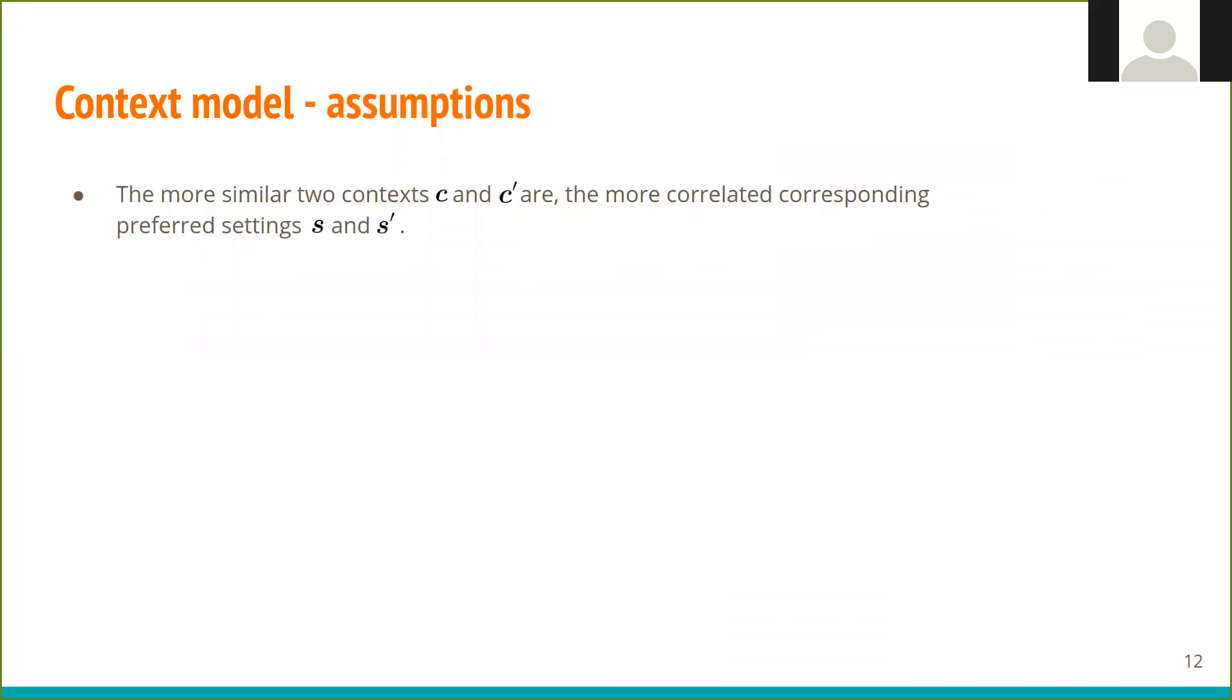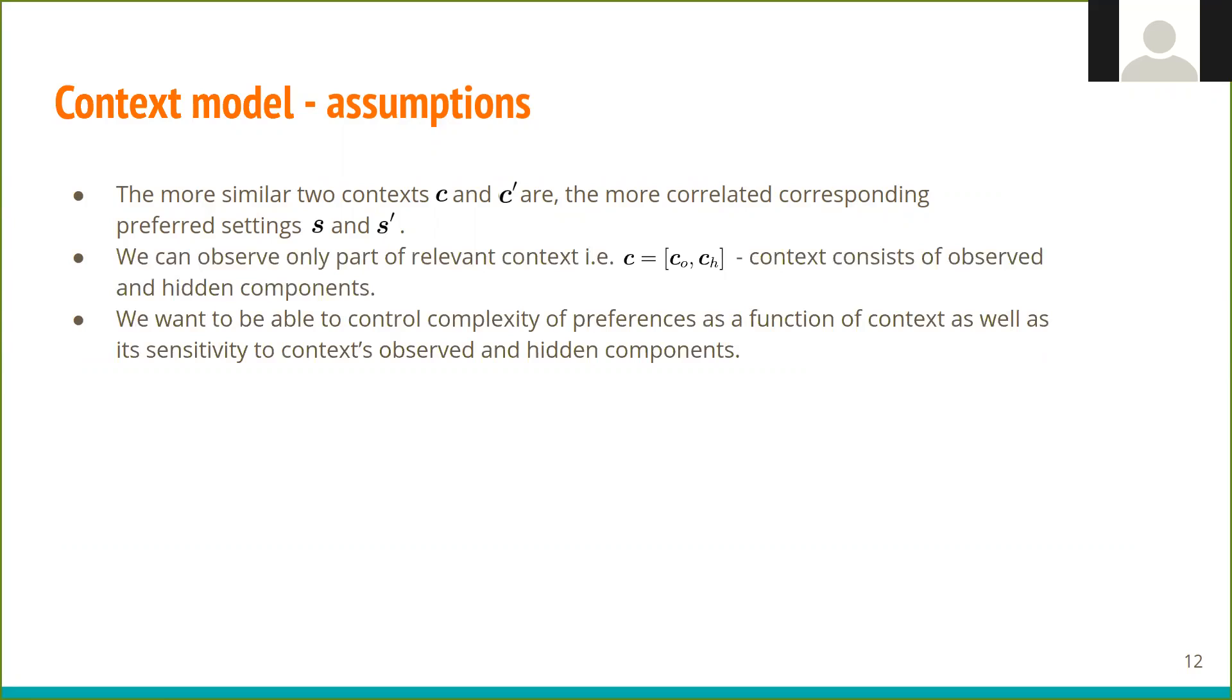In general, we assume that the more similar two contexts are, the more correlated corresponding preferred settings. Moreover, we assume that context consists of observed and hidden components, and that the agent can access only the observed component. Finally, we want to be able to control complexity of preferences as a function of context, as well as its sensitivity to context, observed, and hidden components.